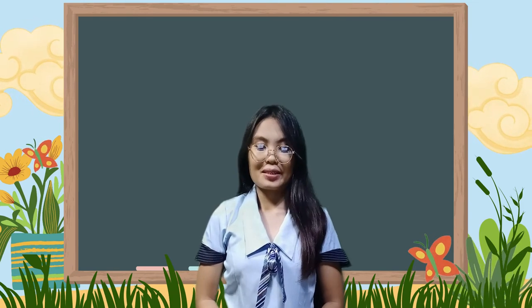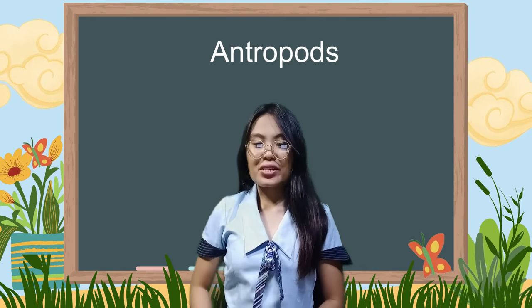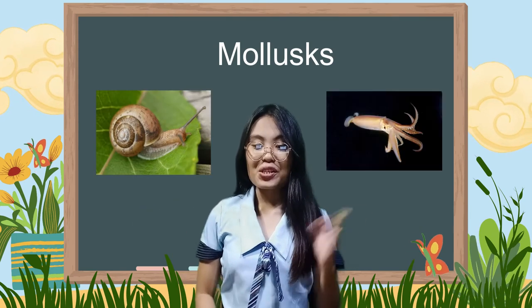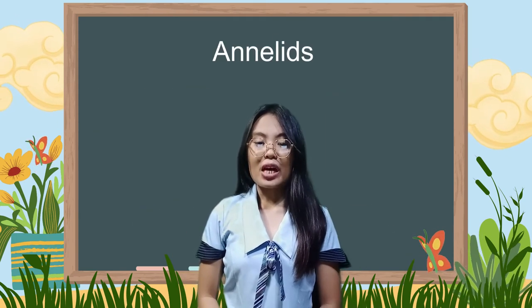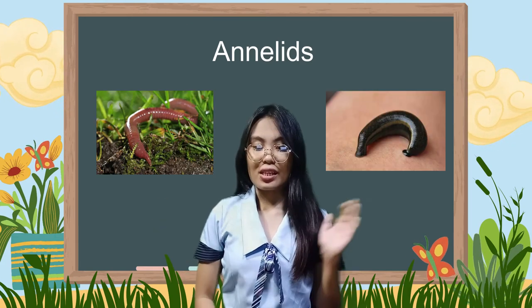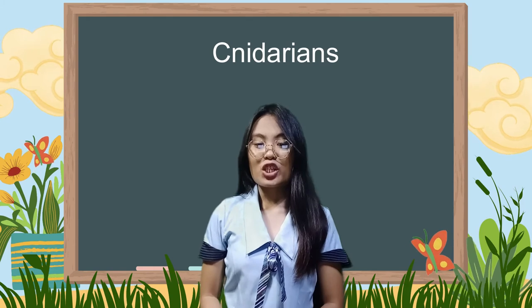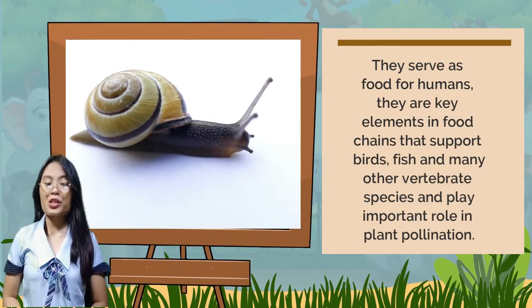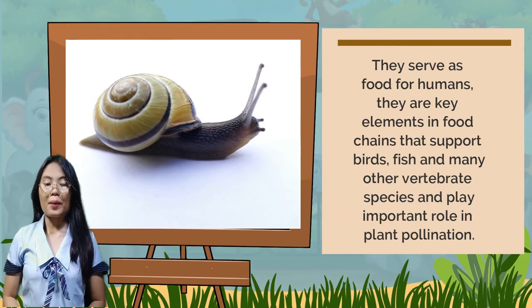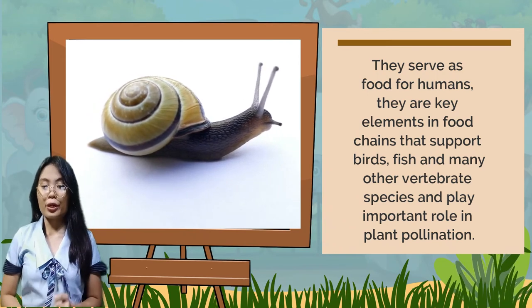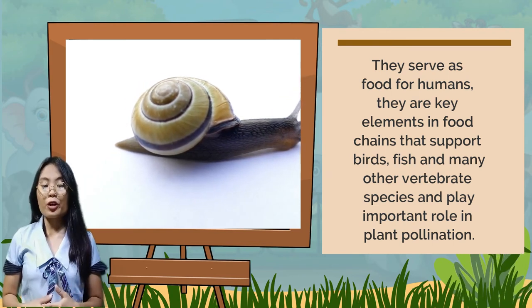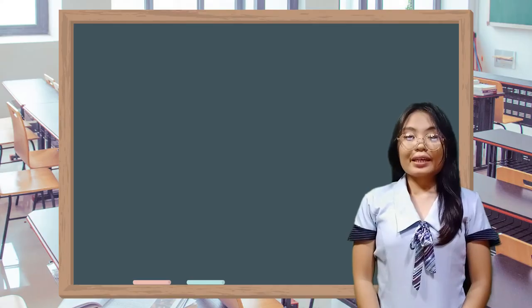These are some familiar examples of invertebrate animals. Invertebrate animals serve as food for humans. They are the key elements in the food chain that support birds, fishes, and many other vertebrate species. And they play an important role in plant pollination.